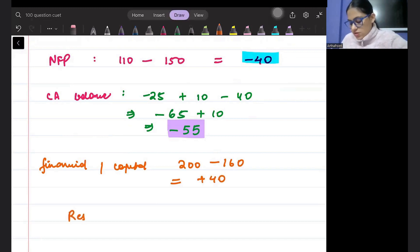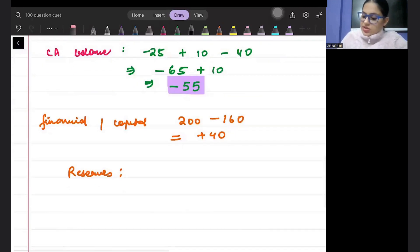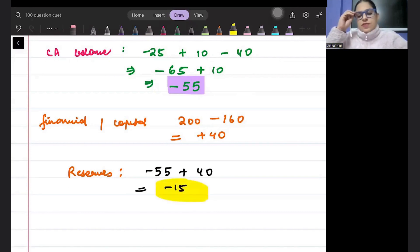So what will be net holding of the reserves? Reserves will be minus 55 plus 40. That means minus 15. So the answer to this question will be minus 15. Okay Peter, I hope all of you have understood this question.